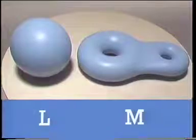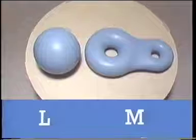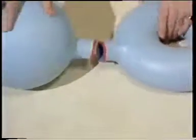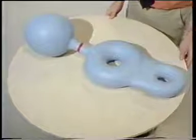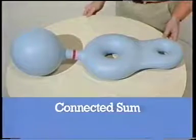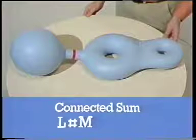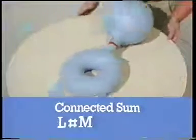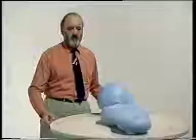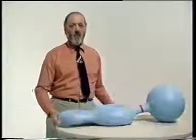We can do this for any two surfaces L and M. The new surface is called a connected sum of the surfaces L and M, and we write it like this. By the way, it doesn't matter in which order you take the surfaces — in other words, the construction is commutative. So that's our construction, and we can do it repeatedly.